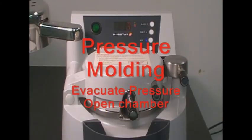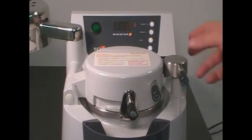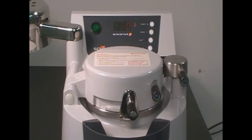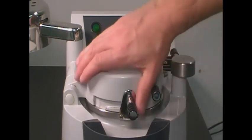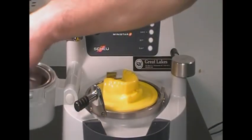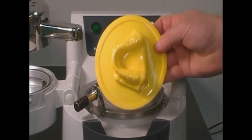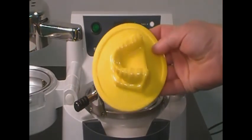A series of beeps will identify the pressure molding and cooling cycle is complete. Evacuate the pressure by pressing the air button. Allow the pressure to completely drain before unlocking the chamber handle. Then unlock the clamping ring or frame holding the material to the chamber and swing open the chamber. Remove the material.